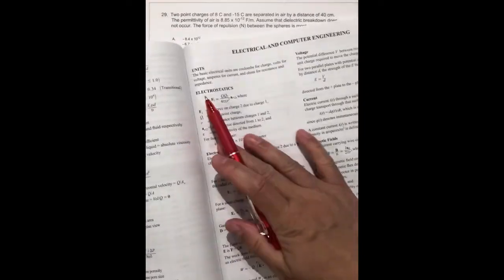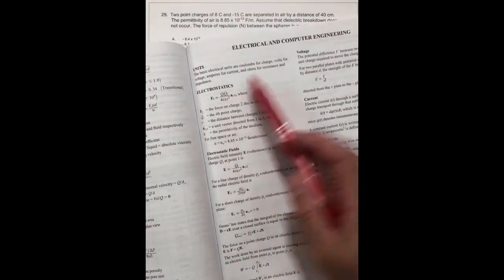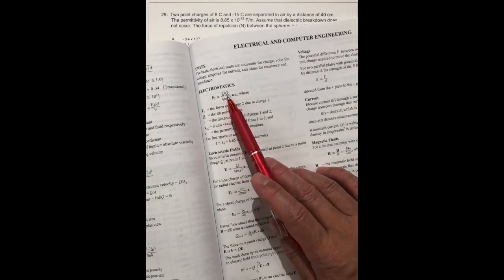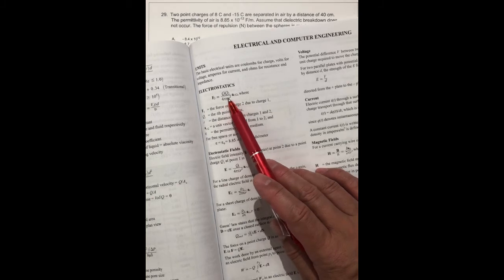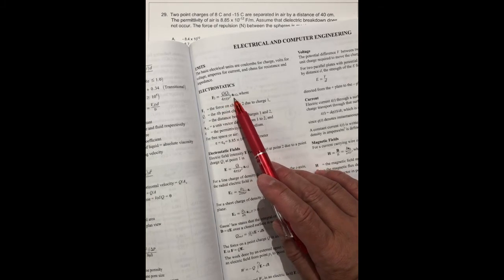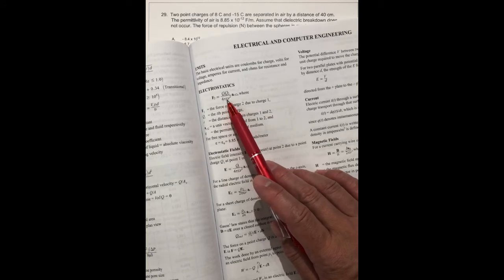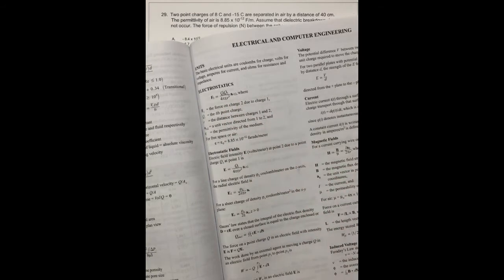Let's talk about the electrostatics. They have the formula F2 equals Q1 times Q2 times AR divided by 4 pi epsilon R squared.